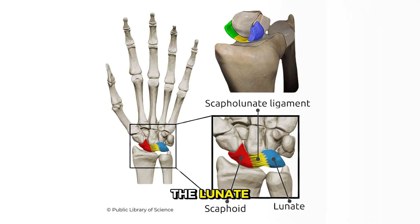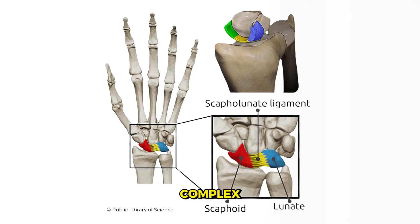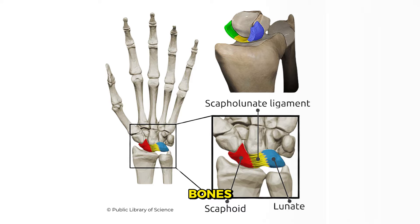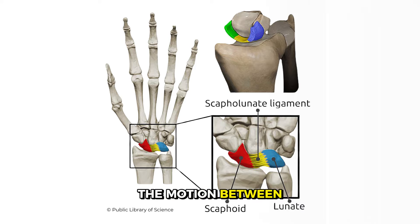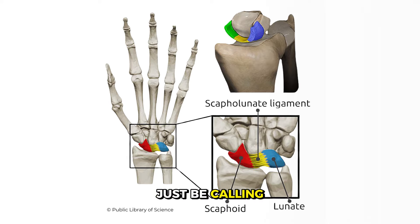The scaphoid and the lunate are bones within the proximal row and their motions are not only really important but also very complex. Their motion is linked to the motion of other carpal bones and the forces going through the arm. The motion between the scaphoid and the lunate is tightly linked by the scapholunate ligament, which I will just be calling the SL ligament from here on out.